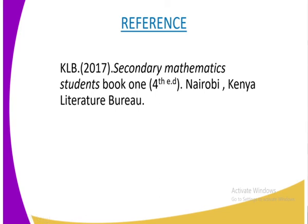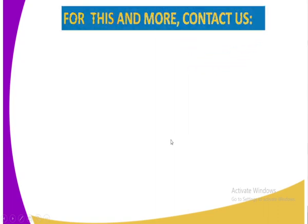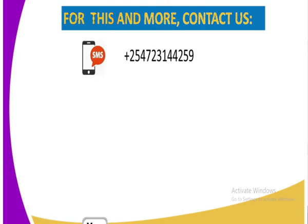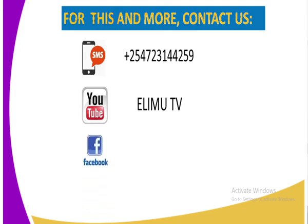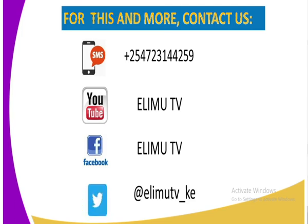For more information in this lesson, you can refer to KLB, which is 2017, Secondary Mathematics, Students Book 1, which is the 4th edition Nairobi, and it has been certified by the Kenya Literature Bureau. And to get this lesson and many more of our Mathematics Form 1, you can send us an SMS through the number that is on our screen, or you subscribe to our YouTube channel, which is Elimu TV, or you can also subscribe to our Facebook page, which is also Elimu TV, or you tweet us at Elimu TV underscore KE. Let us subscribe to all these channels, and we shall get more of our Mathematics Form 1, which are very enjoyable lessons. Thank you.